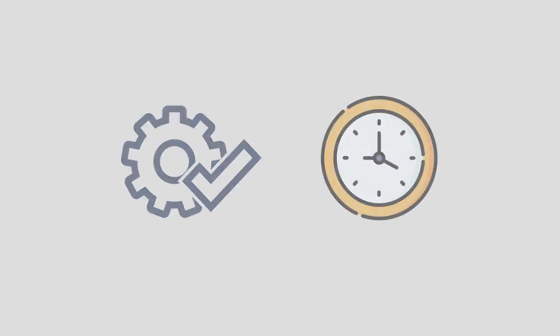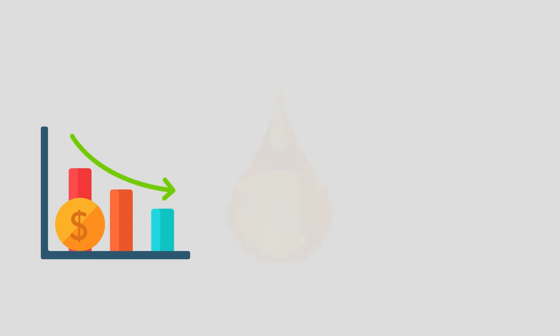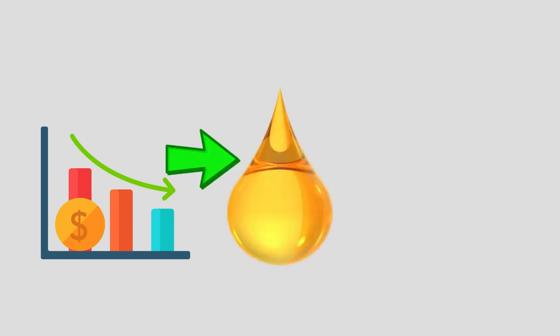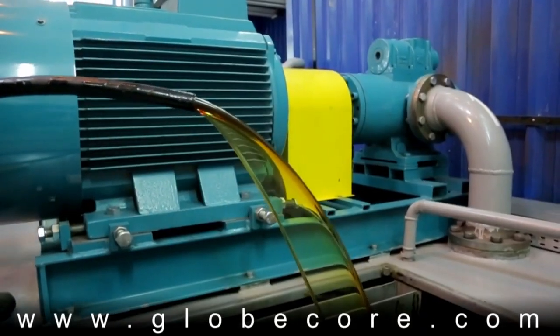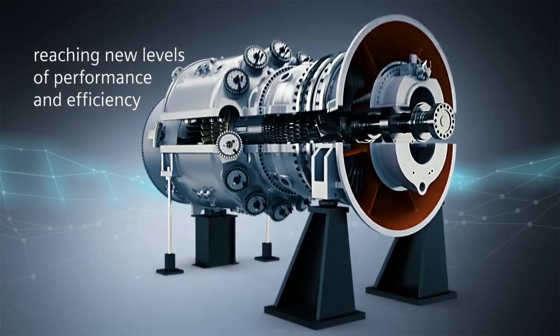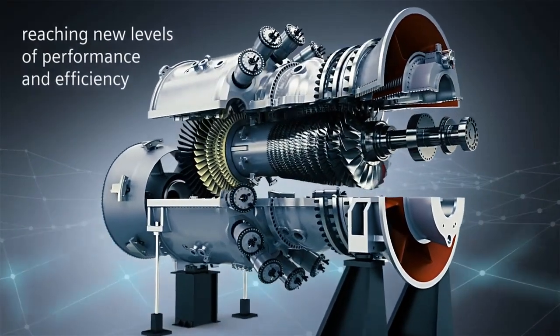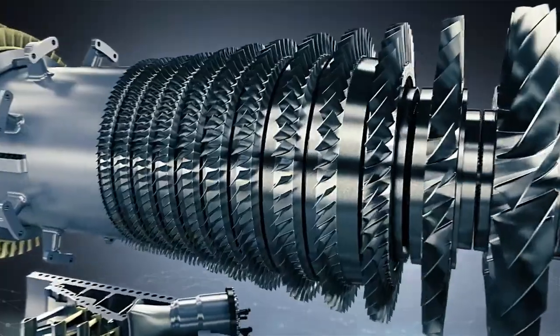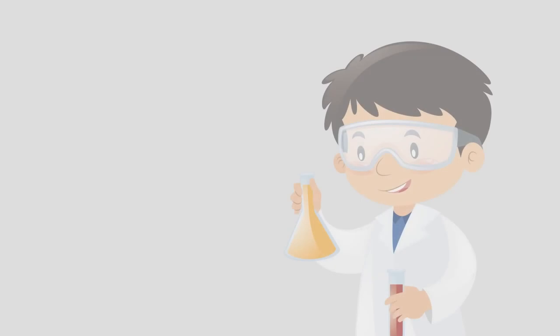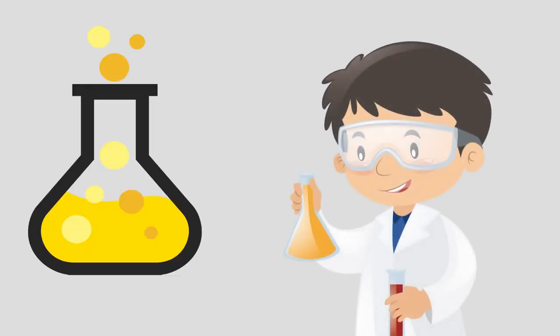The operational reliability of power generating equipment, the extension of repair intervals, and the repair and operation costs largely depend on the condition of turbine oil, which is a process fluid in the system for lubrication and control of turbine generator sets of power plants. As of today, one of the main problems of using turbine oils is to ensure the stability of their physical and chemical properties over a long period.